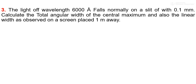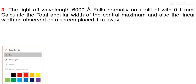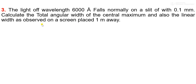Next numerical: light of wavelength 6000 angstrom falls normally on a slit of width 0.1 mm. Calculate the total angular width of the central maximum and also the linear width as observed on a screen placed 1 meter away.